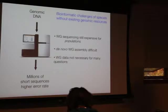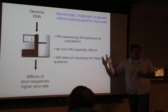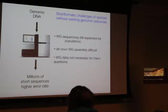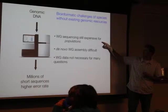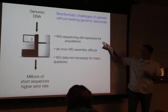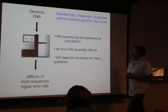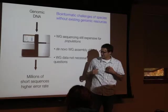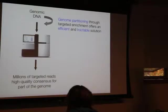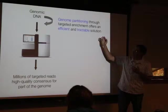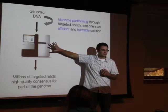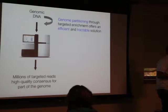We're interested in genome partitioning because it's still challenging to deal with whole genome data. There are a lot of bioinformatic challenges for species without existing genomic resources. Whole genome sequencing is still expensive for populations, and in species with really large genomes it's still expensive to generate a single genome. Most of our questions in ecology, evolution, and conservation are informed by sampling multiple individuals — either a phylogeny or within-population studies. De novo whole genome assembly is difficult, and whole genome data is not necessary for many questions.